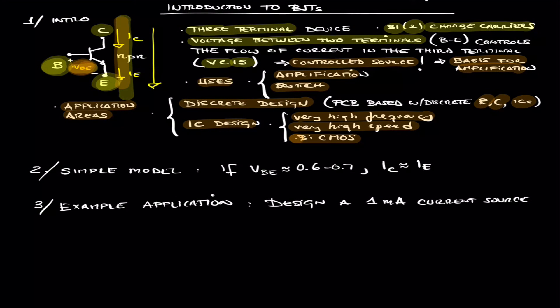A simple model here. The simplest model when you are doing DC circuit analysis is that if the voltage between the base and the emitter is sufficiently high, by that meaning 0.6 to 0.7, you have that junction forward biased, the base-emitter junction, then you have current at the collector, and that current is approximately equal to the emitter current.